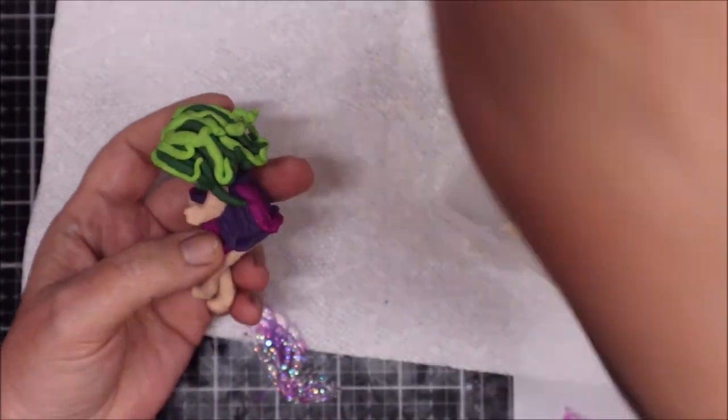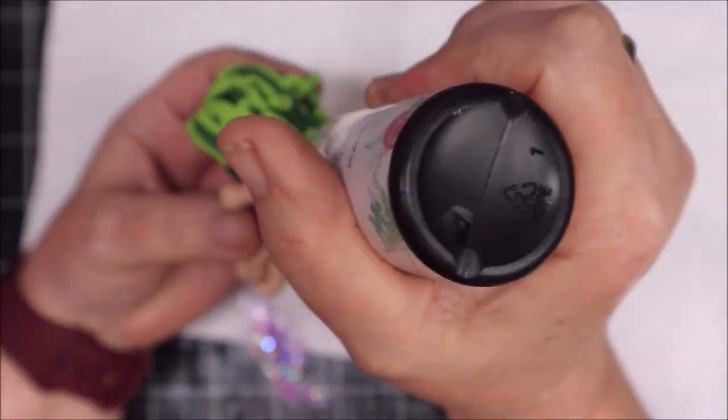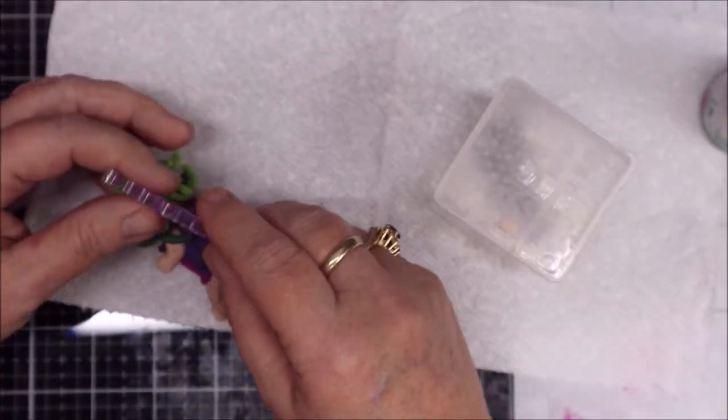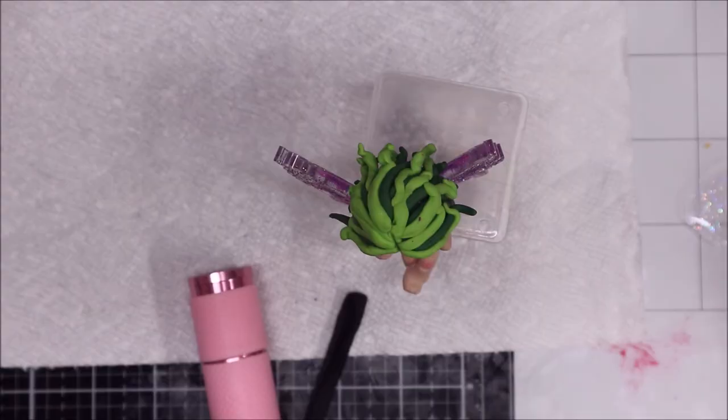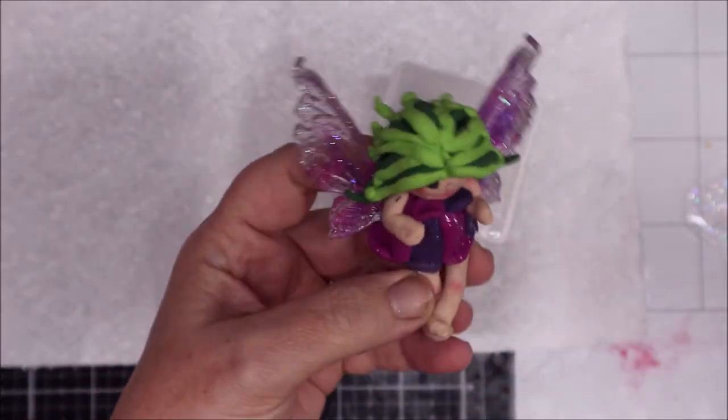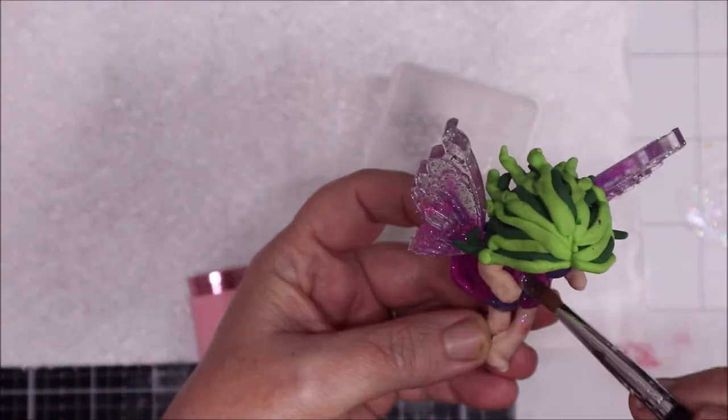So I will take the wings now and use UV resin just to attach them to her body, which worked just fine. I'm also going to use some UV resin with a little bit of glitter in it and put it all over her to give her that sparkling fairy dust.